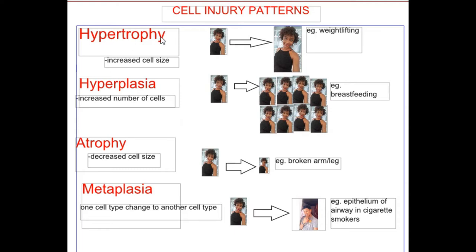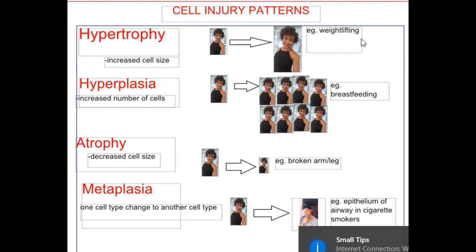Number one is hypertrophy — that's an increase in cell size. I use my picture here to show cells increased in size. Number two is hyperplasia — this is an increase in the number of cells.